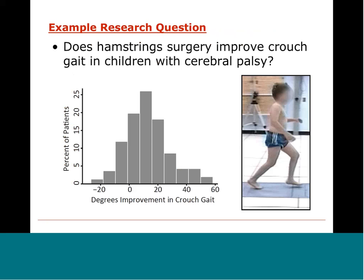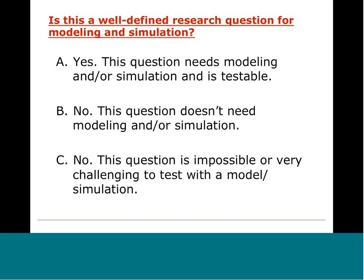Let's try a different formulation. Say we have a large set of patient data with pre- and postoperative gait analysis, and the question is: does hamstring surgery improve crouched gait in children with cerebral palsy, where improvement is defined as the change in knee flexion angle during the stance phase of walking? The possible answers are: A — yes, this question needs modeling and simulation and is testable; B — no, it doesn't need modeling or simulation; or C — it's impossible or very challenging to test with a model.